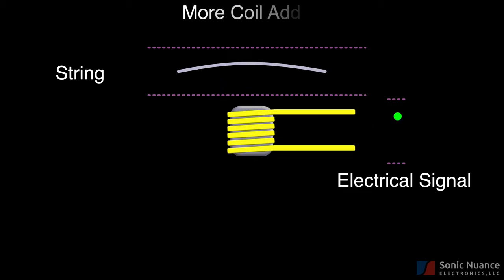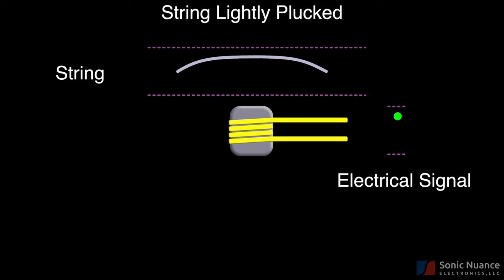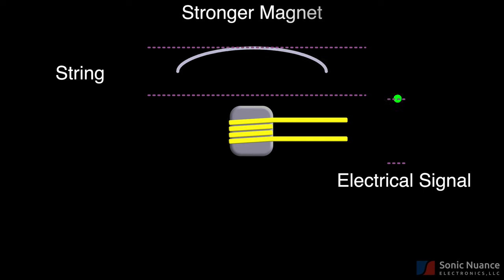As we add more coil of wire in the pickup, the signal increases from our lightly plucked string case. Let's go back to our baseline where the string is lightly plucked. If the magnet were to be strengthened, the electrical signal would also increase.